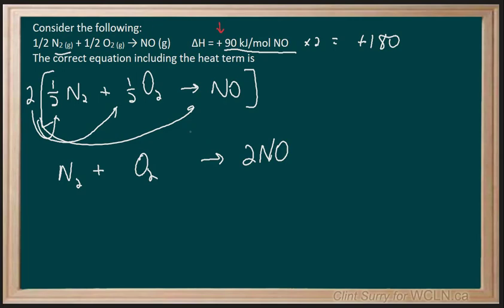As it is positive, we will have to put it on the reactant side. So I'm going to put the 180 kilojoules here. And this will be the correct version of the equation that we're working with.